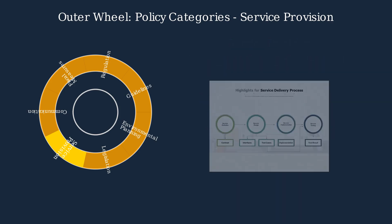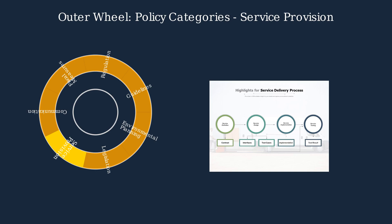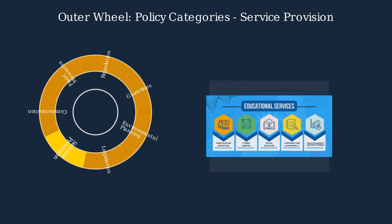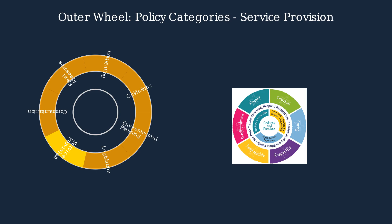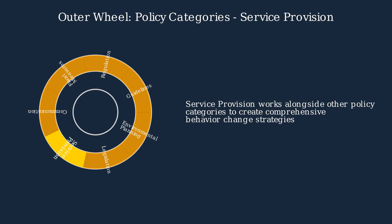When implementing service provision policies, it's important to follow a structured service delivery process, typically including service definition, design, implementation, and testing. Service provision can take many forms across different sectors—in education, services may include curriculum development, student support, and special education programs. Effective service provision often adopts a person-centered approach, where services are designed around the needs of individuals. Service provision works alongside other policy categories such as guidelines, communication, and fiscal measures to create comprehensive behavior change strategies.